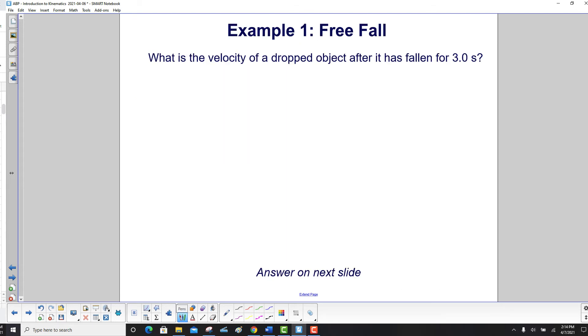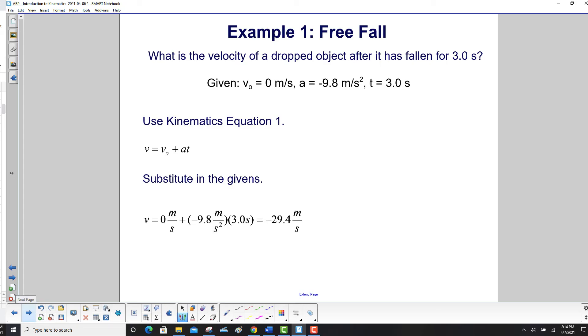What is the velocity of a dropped object after it has fallen for 3.0 seconds? The answer will be on the next slide. What's cool about this problem is you've only been given one given. However, let's see, it's a dropped object so we can always assume that it started off with the velocity of zero.